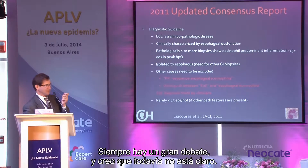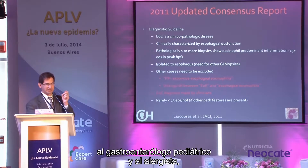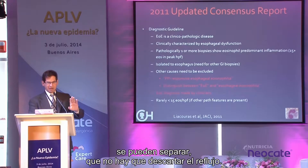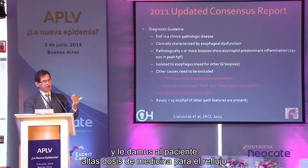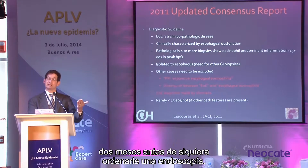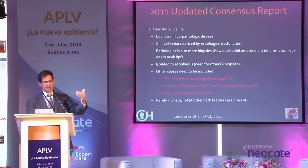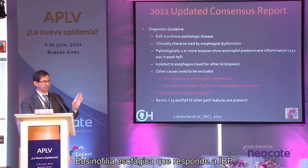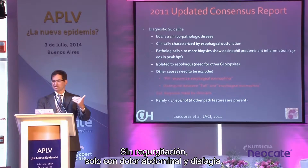Reflux is probably the most common cause of eosinophils in the esophagus, and there's still debate. Adult gastroenterologists think you can just separate reflux out without formally ruling it out, but I think you really must. We put patients on high-dose reflux medicine for two months before even getting an endoscopy. If eosinophils are still present after that, it's EOE; if they're gone, it's reflux — or what the adult world calls PPI-responsive esophageal eosinophilia, which in my mind is just reflux without regurgitation.